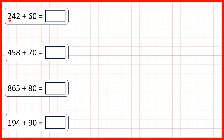First, we have 242 plus 60. Now, because we're adding a multiple of 10, we can highlight our tens digits. We have four tens, and we need to add six tens.